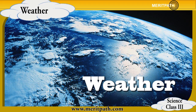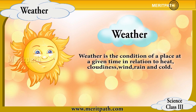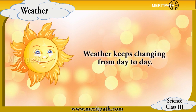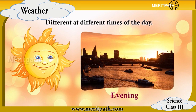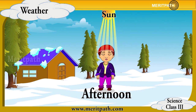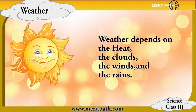Weather is the day-to-day condition of a particular place. For example, it was rainy today at school, yesterday it was hot at home. It is different at different times of the day. The weather in morning and evening is pleasant because of the slanting rays of the sun, while during afternoon the weather is hot as we receive direct sunlight. At nights the temperature is cold as there is no sun. So we can say that weather conditions tend to change according to heat, cloud, wind, and rain.